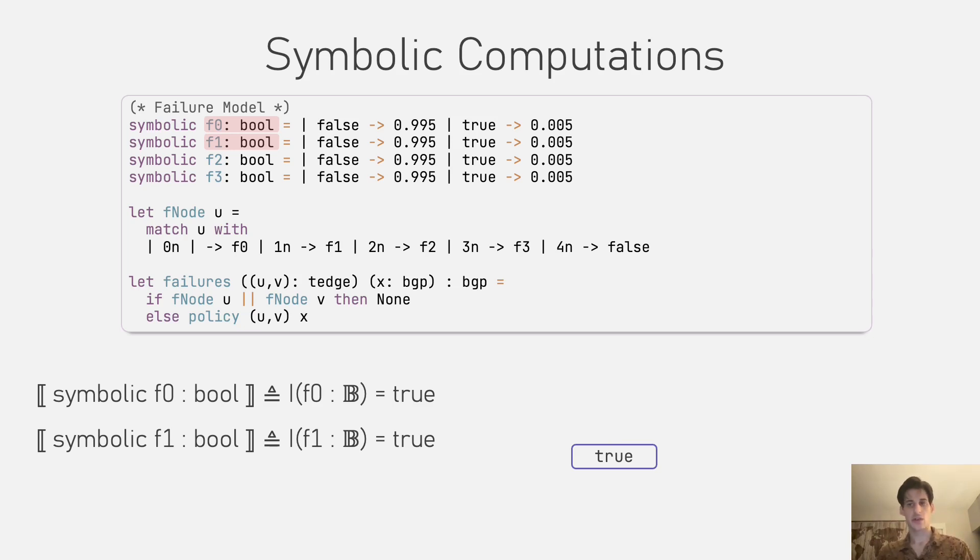which is one of the things that gives us a compact representation of this potentially very large state space.